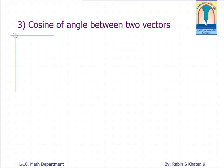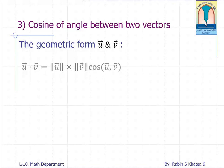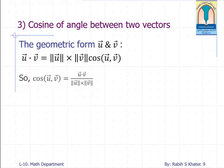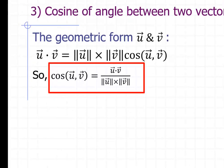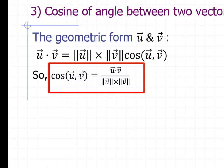Cosine of angle between two vectors. We already found the geometric form of the dot product of two vectors. Manipulating this formula we'll get the value of the cosine between the two vectors as the ratio of the dot product between the vectors to the product of their magnitudes.